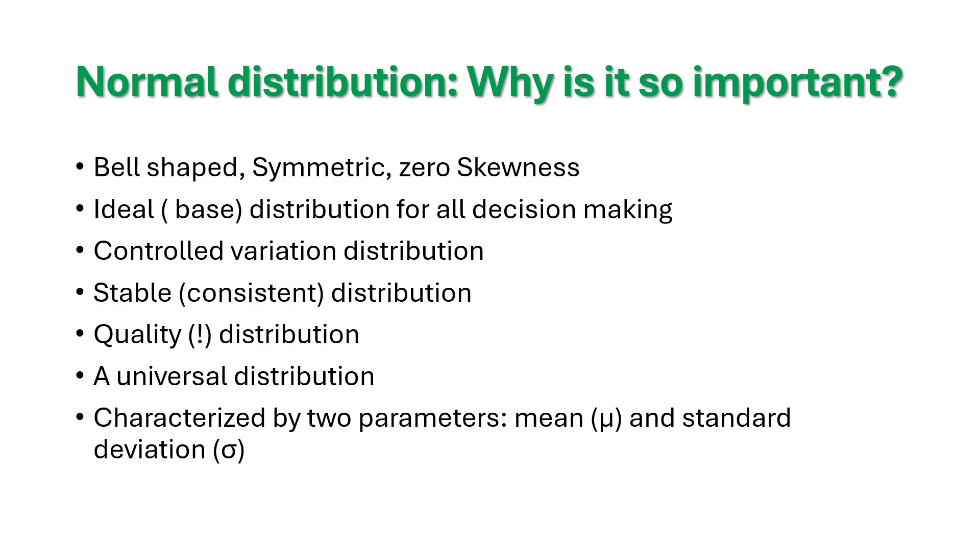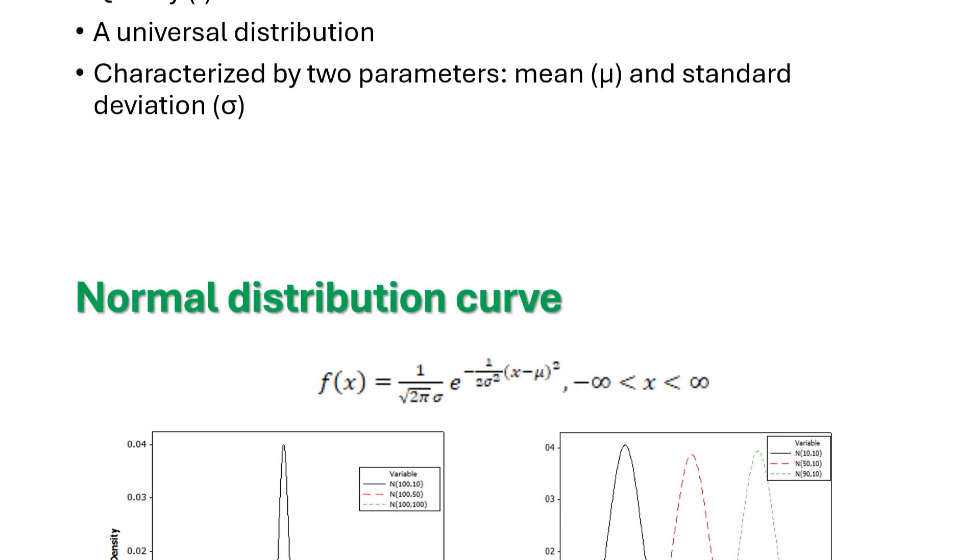It accounts for controlled variation. It's also called stable distribution or consistent distribution. And of course, it's a quality distribution and a universal distribution per se, characterized by two parameters called mean and standard deviation.